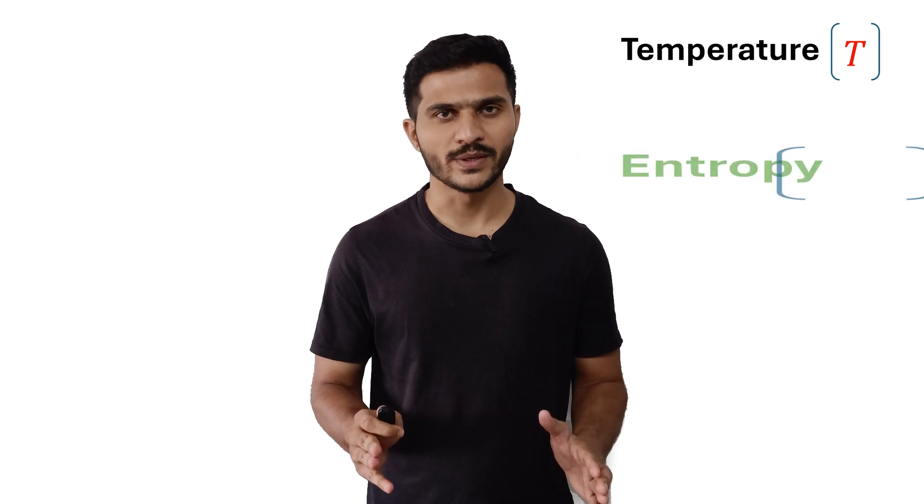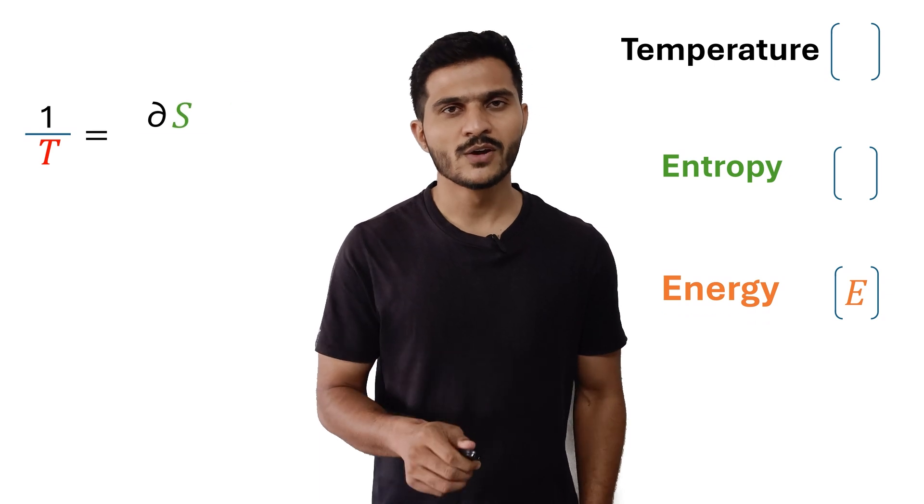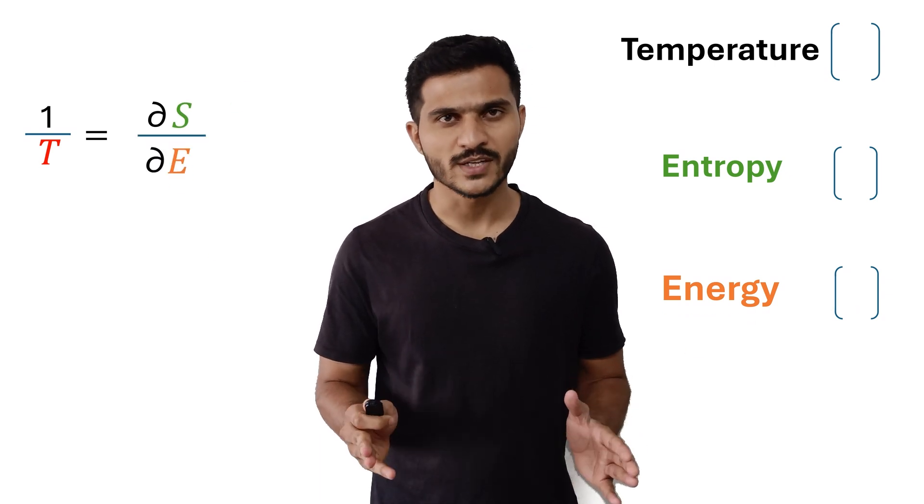Now let's look at first what actually temperature is and how it is formally defined. Temperature is a measure of how hot or cold something is, but scientifically it goes deeper than just how something feels to touch. Temperature is defined by entropy. Inverse of the temperature is defined as the change in entropy of the system when total energy of the system is changed.